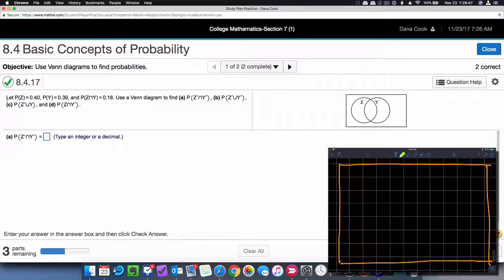So we're faced with this problem here. Let the probability of Z equal 0.40, the probability of Y equals 0.39, the probability of the intersection of Z and Y equal 0.18. They want us to use the Venn diagram to determine the probabilities of these things: Z complement intersect Y complement, Z complement union Y complement, Z complement union Y, and Z intersect Y complement.